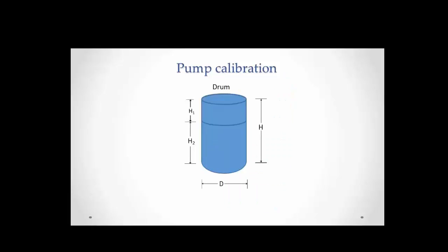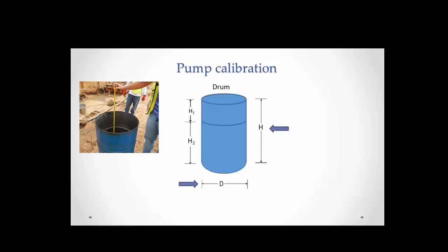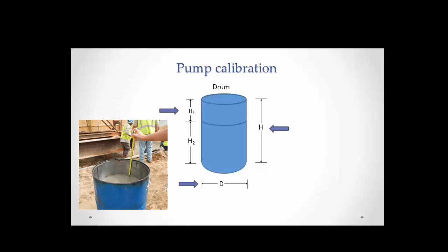Here is a sketch that shows the dimensions we need to determine for the test. We measure the inside diameter D, the total height of the barrel H, which is measured from the inside, and at the end of the stroke we measure the free distance between the height of the grout and the top of the barrel.